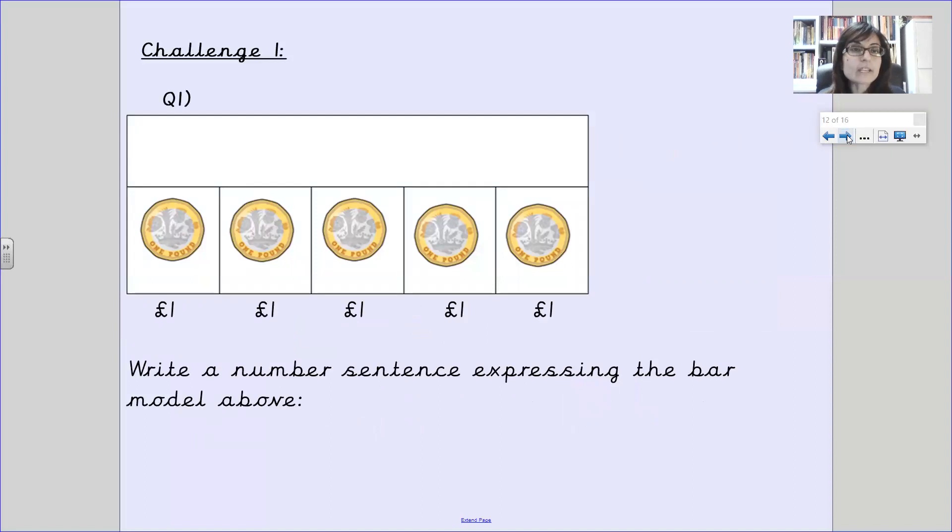Here are your challenges. Challenge one. You have got some one pound coins. What you need to do is you need to write a number sentence showing how to add all these one pound coins together. If you get stuck, remember you can pause the video and watch it again before you attempt the challenges. Can you write a number sentence and show how much money we have here?